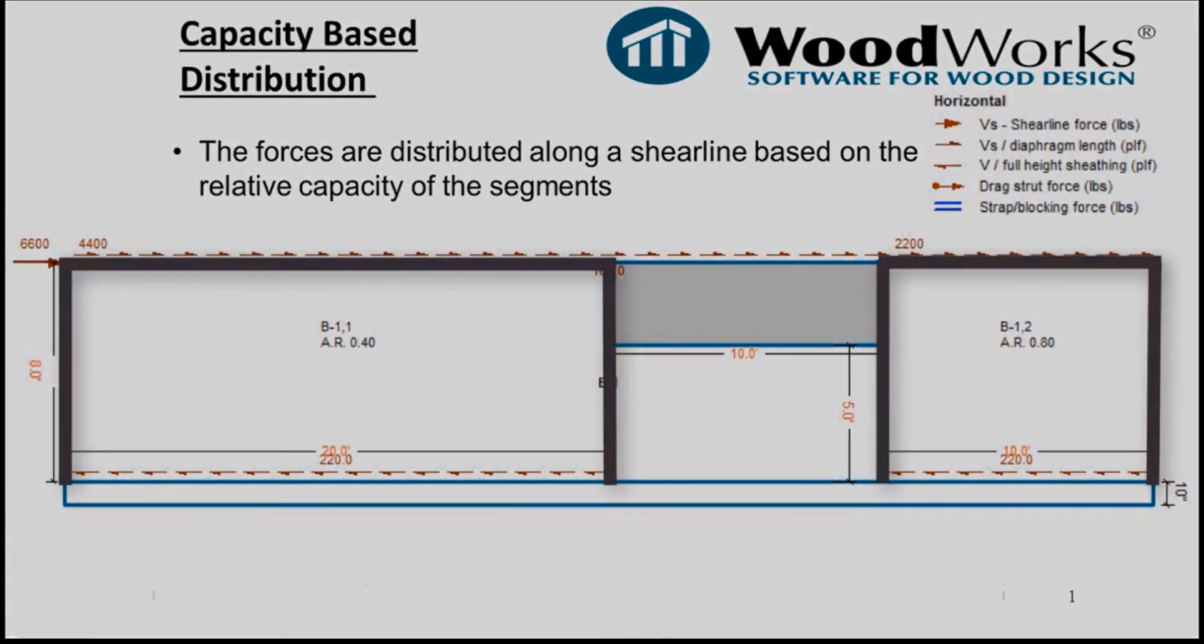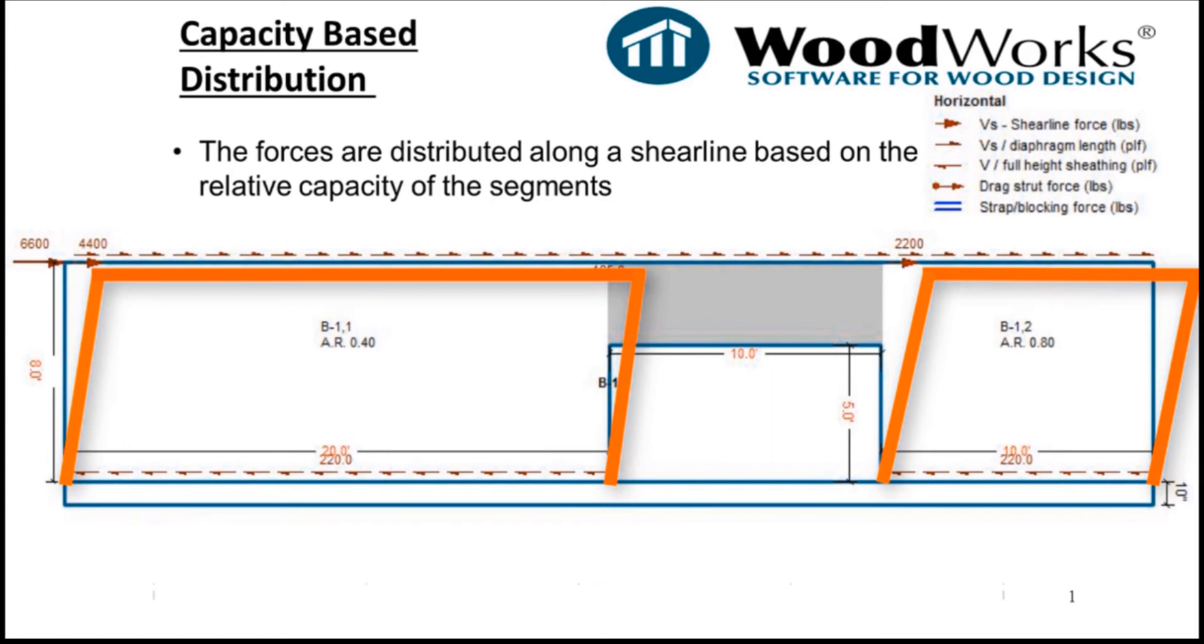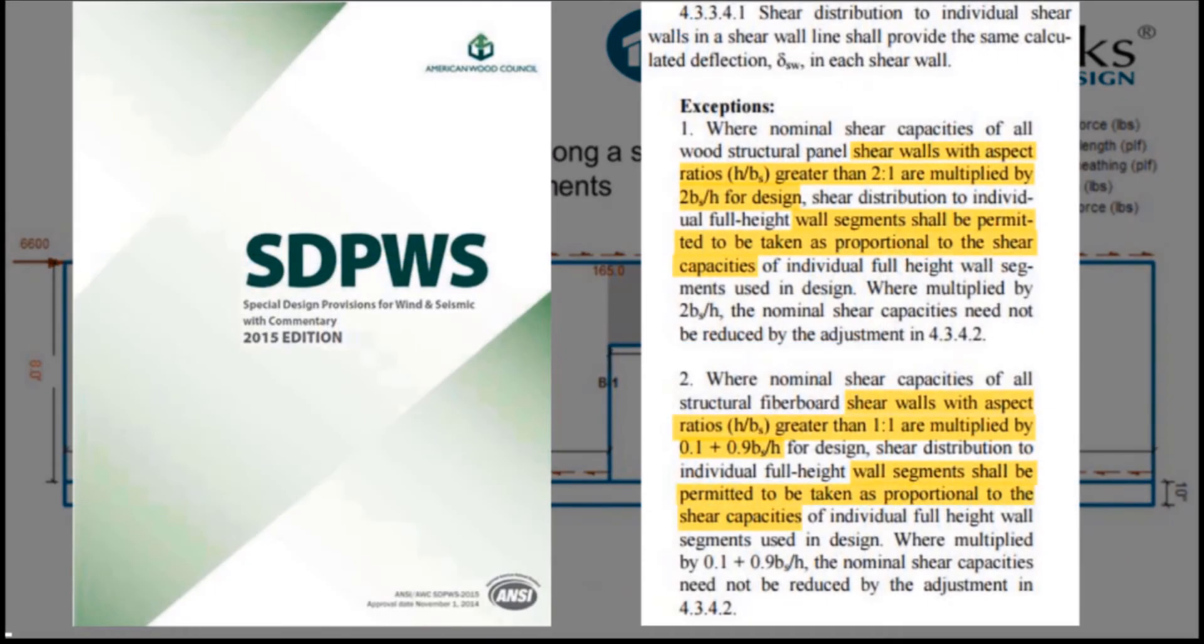Using this deflection results from shear walls, the red lines in this figure represent the deflected shape of the shear line. Remember, in reality, we would expect a shear line to deflect as one unit with each segment deflected equally, but this doesn't always occur. Even though the deflected shape may not be 100% realistic, using capacity-based distribution is considered a valid distribution method in many codes and standards, including SDPWS 2015.